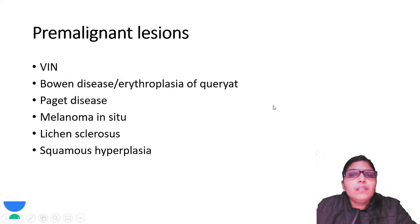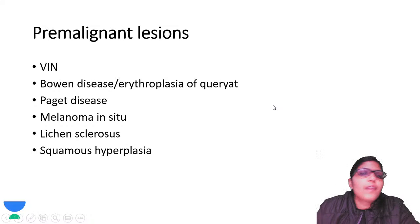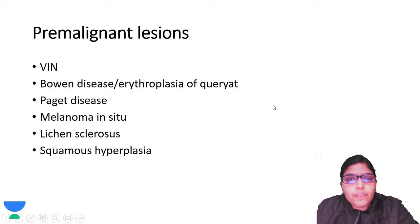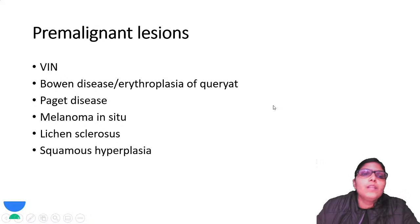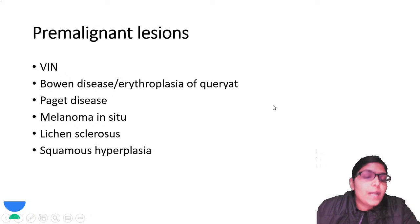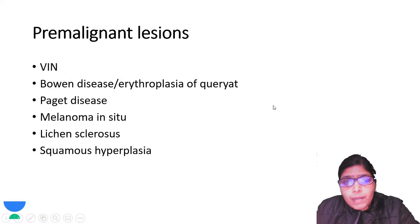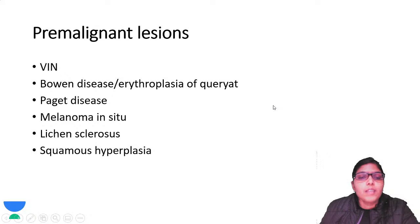In pre-malignant lesions, the most important one is vulval intraepithelial neoplasia (VIN), which is similar to cervical intraepithelial neoplasia (CIN) - it is the counterpart occurring in the vulva. You can also have Bowen's disease or erythroplasia of Queyrat, which are HPV-related lesions. Then you have Paget's disease, melanoma in situ, lichen sclerosis (a chronic skin problem), and squamous hyperplasia.